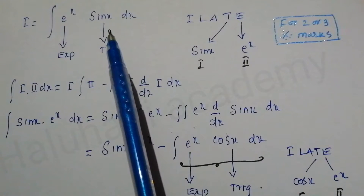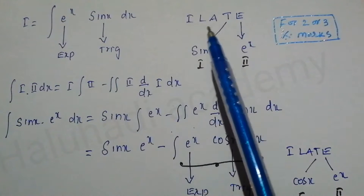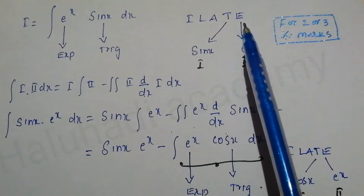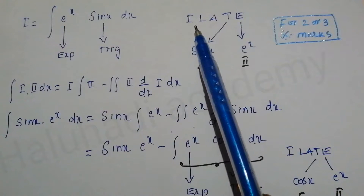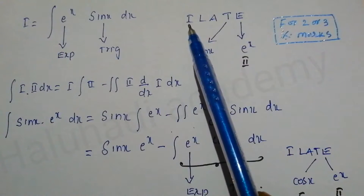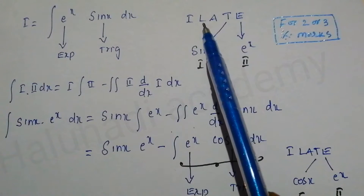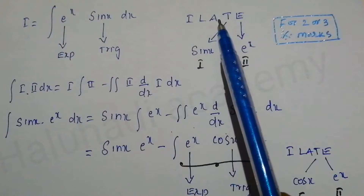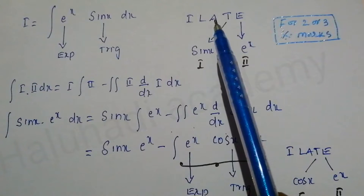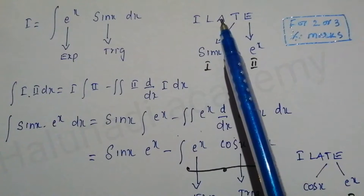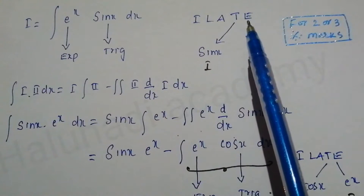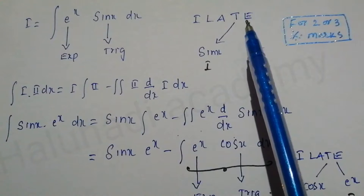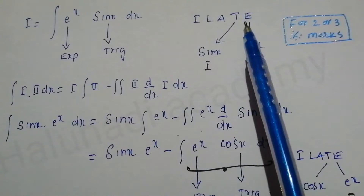I will apply the ILATE rule. I means inverse, L means logarithmic, A means algebraic, T means trigonometric, and E means exponential function.